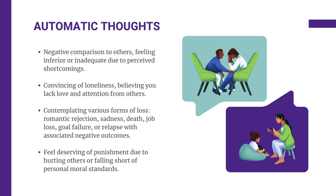Here are some examples of automatic thoughts. In the first example, the focus is on comparing oneself to others and arriving at the conclusion of being inferior and inadequate. This judgment is generally rooted in perceptions of lacking talent, attractiveness, charm, success, or intelligence compared to others. It's important to tailor the language to suit an individual's unique experience as expressed in treatment. The overarching emotion tied to this situation is often a sense of inferiority. When automatic thoughts center around feeling inferior, individuals may respond either by striving to prove themselves or conversely by freezing and withdrawing completely. Understanding and addressing these automatic thoughts is crucial in guiding individuals towards healthier coping mechanisms and treatment.